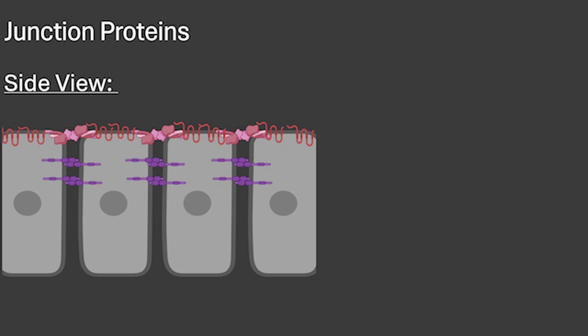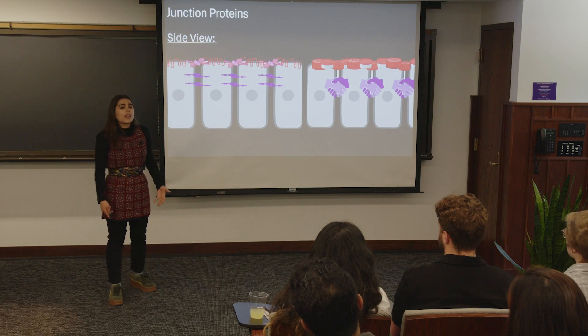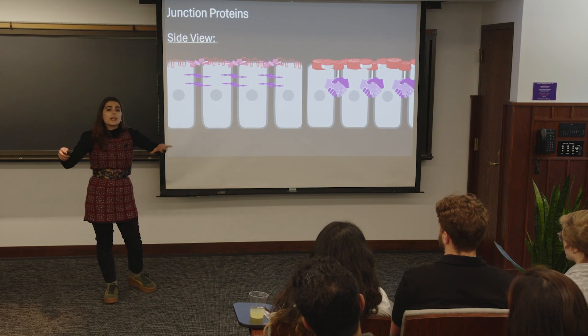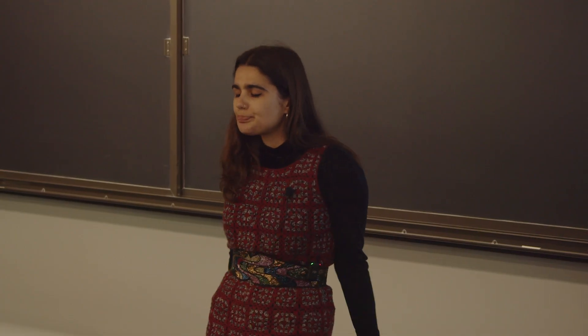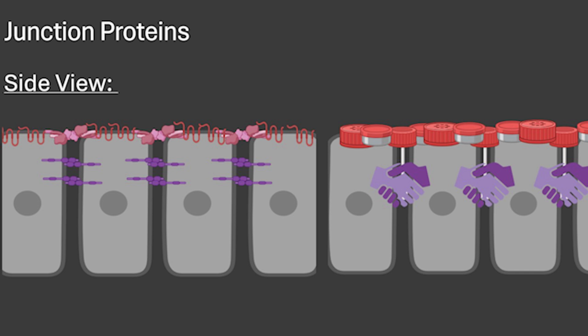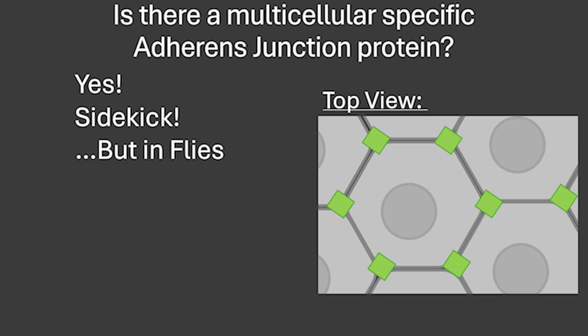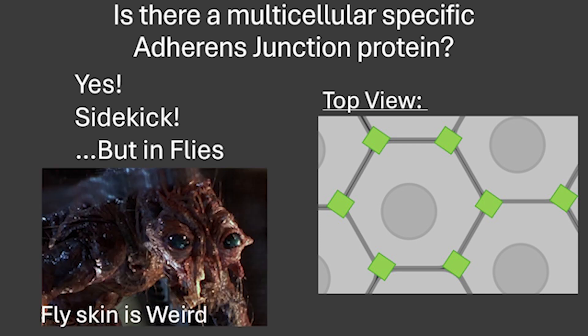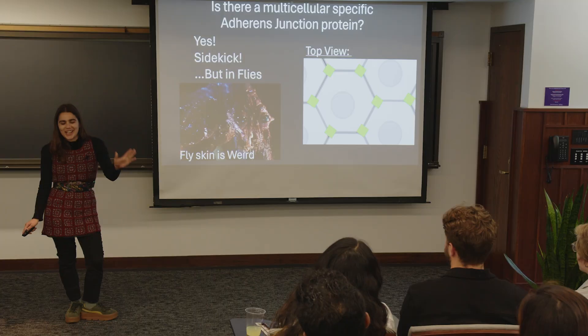What proteins am I tagging with GFP? I am tagging junction proteins. To walk through two main types: we have tight junctions in red up top and adherence junctions below in purple. Tight junctions you can think of like a bathtub stopper — they stop fluid from getting through. Adherence junctions are like cells holding hands; that's what's actually adhering them together. There are many different types of tight junction proteins, but there are only really different flavors of adherence junction proteins. So I started thinking — are there any more adherence junction proteins, ones specific to those multicellular junctions? And yes, there is — it is called sidekick, but it's only in flies, and fly skin is weird. You'll have to take my word for it.